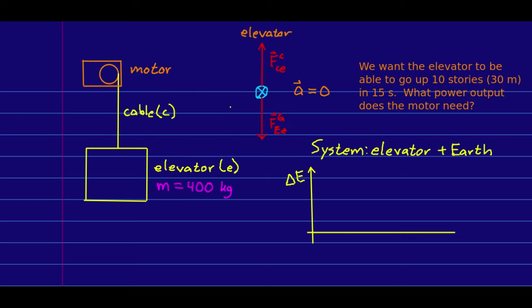Let's look at an example with power. So suppose we have an elevator, which with few people in it is 400 kilograms, and it's being raised by a cable, which is on a motor. And we want the elevator to be able to go up 10 stories, which would be about 30 meters in 15 seconds. What power output do we need the motor to have? So when the elevator is going up at a constant speed, its acceleration is zero. And so we know at that point that the force that the cable is exerting on it is equal in magnitude to the gravitational force. And that will be in turn the force that the motor is exerting on the cable.